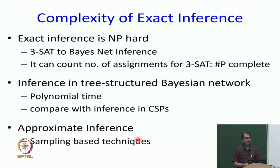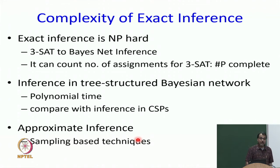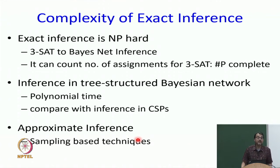Bayes net exact inference has to be NP-hard — you cannot get away from exponential. However, like in CSPs, if the structure is a tree, you can do it in polynomial time. There is a poly-tree structured Bayesian network where inference can be done in polynomial time. Just as you have cycle cut sets in CSPs, you have probabilistic cut sets in Bayesian networks, and variable elimination here corresponds to bucket elimination there. CSPs and Bayes nets are really two sides of the same coin, though in slightly different complexity classes.